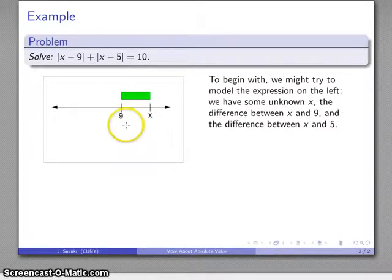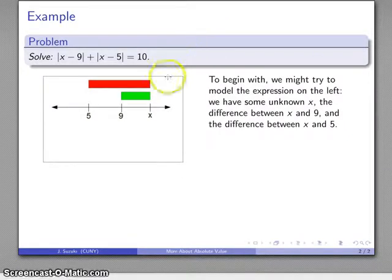I also have the difference between x and 5. Once I've placed 9, 5 has to be over here someplace. So there's 5, and there's my difference between x and 9. And so there's my representation of the sum, or my representation of the differences x minus 9 and x minus 5.